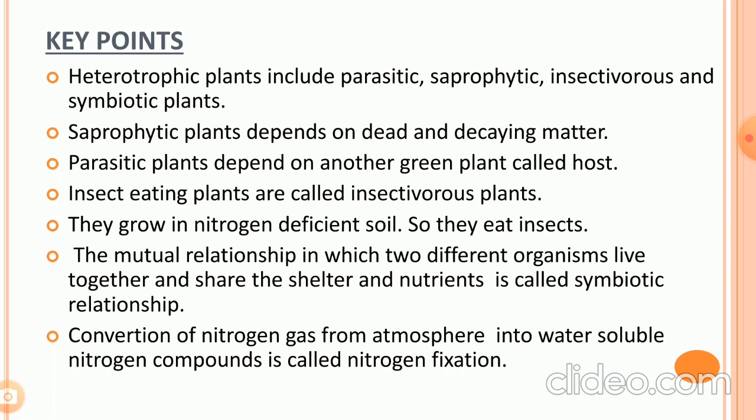To summarize: heterotrophic plants include parasitic, saprophytic, insectivorous, and symbiotic plants. Saprophytic plants depend on dead and decaying matter. Parasitic plants depend on another green plant called the host. Insectivorous plants grow in nitrogen-deficient soil and eat insects. The mutual relationship in which two different organisms live together and share shelter and nutrients is called symbiosis. The conversion of nitrogen gas from the atmosphere into water-soluble nitrogen compounds is called nitrogen fixation.